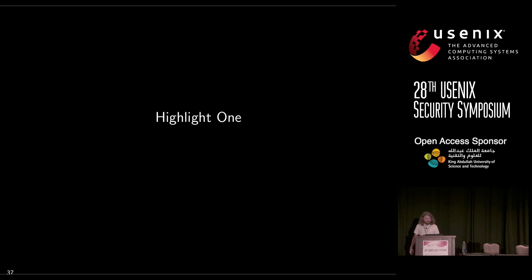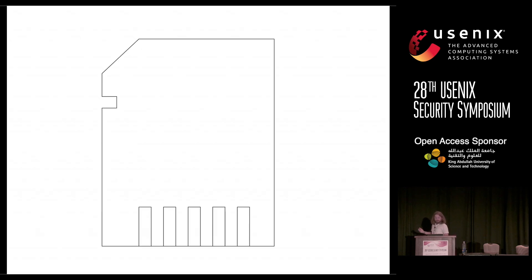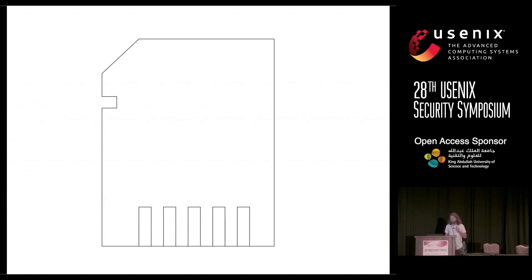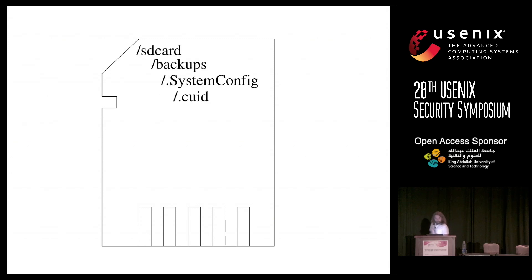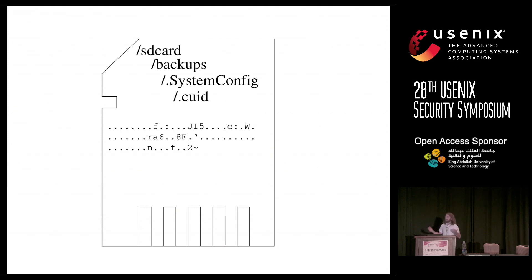The first highlight: the Chinese company Baidu uses external storage as a covert channel. Two apps communicate with each other using the SD card — probably the simplest covert channel you can think of. Any app can read from or write to shared storage if they have the read and write external storage permission. Baidu stores a base64-encoded object at /sdcard/backup/.SystemConfig/.cuid. When you un-base64 it, it's all binary, so that's where the reverse engineering comes in.